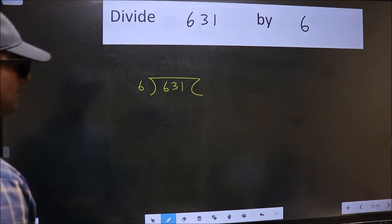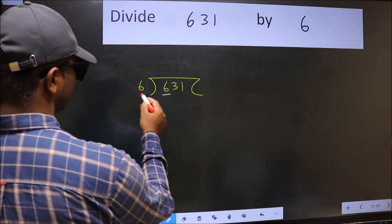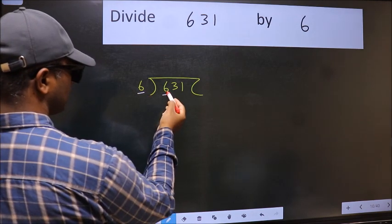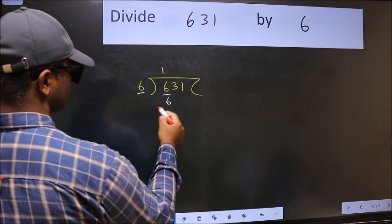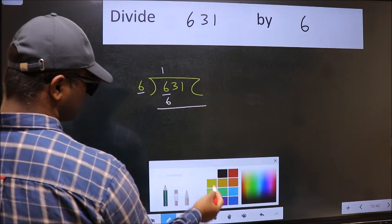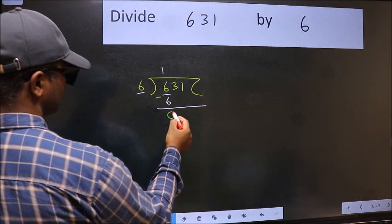Next, here we have 6 and 6 here. When do we get 6 in the 6 table? 6 once is 6. Now we should subtract. We get 0.